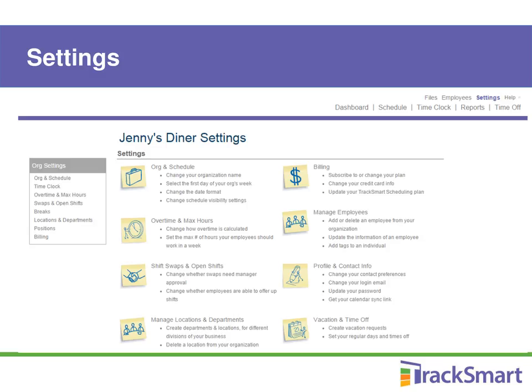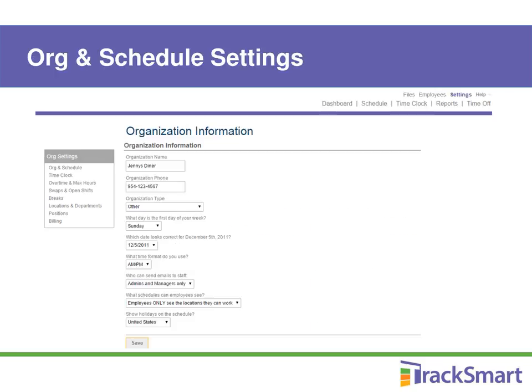You can get to each settings page from the menu on the left. Remember that org info page you filled out when you first signed up? Here's where you can update that if you rushed through. You can set up the first day of the work week for your schedules, time and date formats, holidays to display on the calendar, and some very basic permissions for the people at your business who will be using TrackSmart Scheduling.